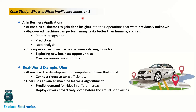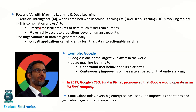Why is artificial intelligence so important? In business applications, AI gives deep insights into operations that were previously unknown, and AI-powered machines can perform many tasks better than humans — such as pattern recognition, prediction, and data analysis. A real-world example is Uber, which uses AI-enabled software to connect riders and taxis effectively. Uber uses advanced machine learning algorithms to predict demand for rides in different areas and deploy drivers proactively, even before actual need arises.